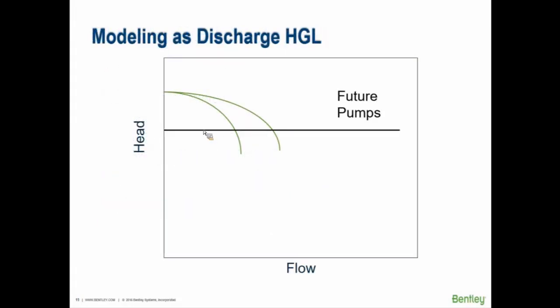You can model a pump as a constant discharge head node — meaning no matter what, the head will always be a certain amount and flow will always be delivered at that rate. This is useful in planning phases when you don't know how many pumps you'll have at the station but know you need to deliver, say, 2,500 gallons per minute. It's a preliminary design approach before actual pump curves are selected.